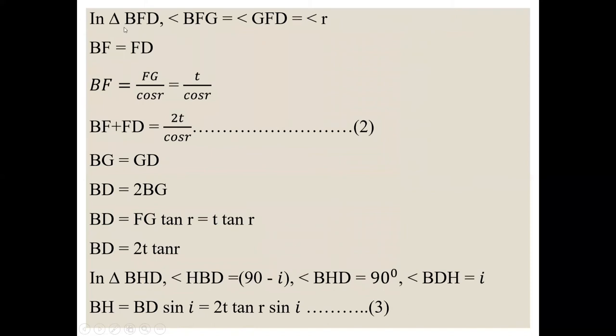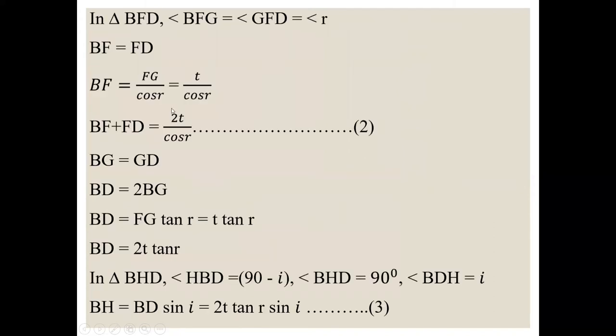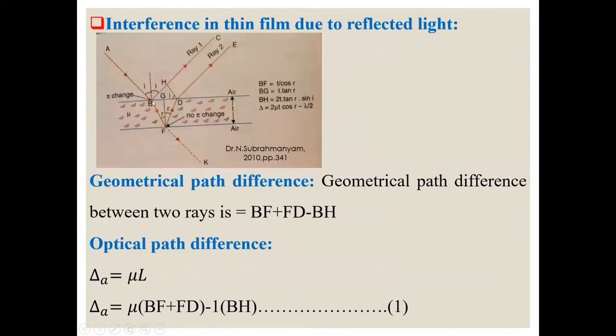In triangle BFD. See this angle BFD in this triangle. This BFG angle is r. GFD angle is again r. So they are same. And BF is FD. So BF is FD. These two sides are equal.